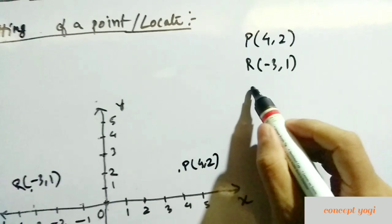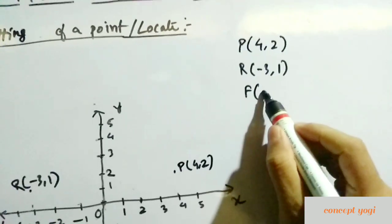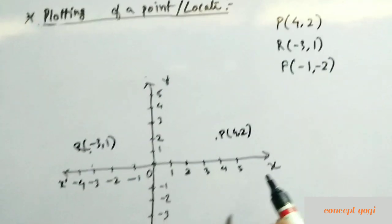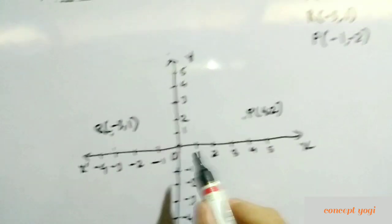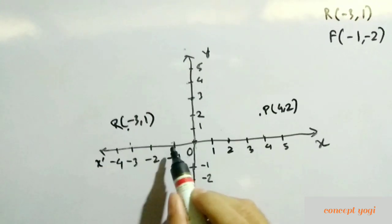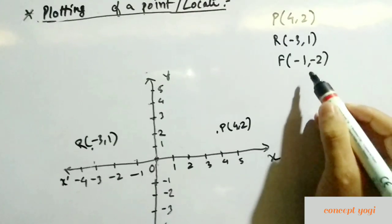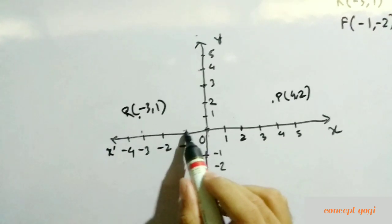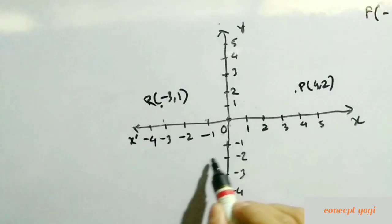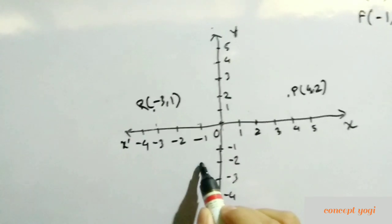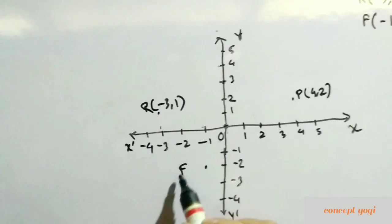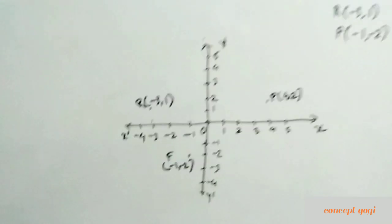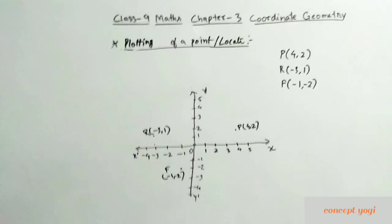Similarly, if the point is F(-1, -2), the x-coordinate is minus 1, so we go to minus 1 on the x-axis. The y-coordinate is minus 2, which means we go 2 units down. So our point F(-1, -2) is plotted here. Like this we can plot any point in the Cartesian plane.